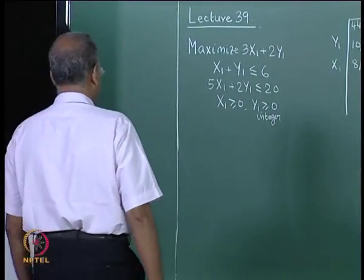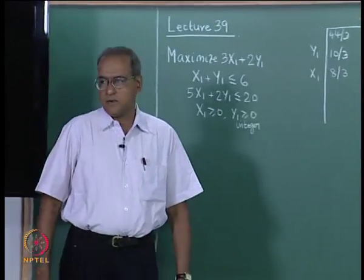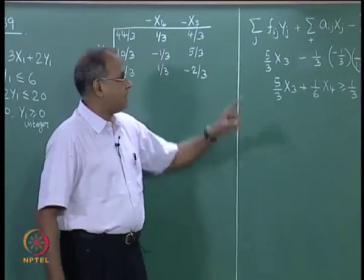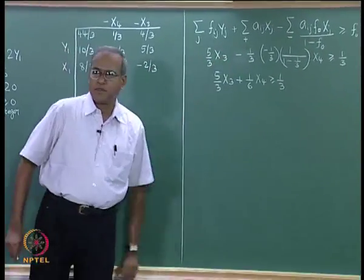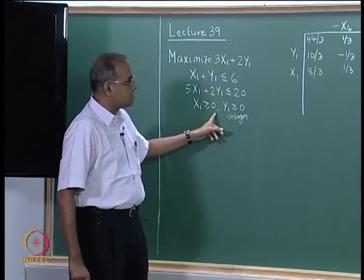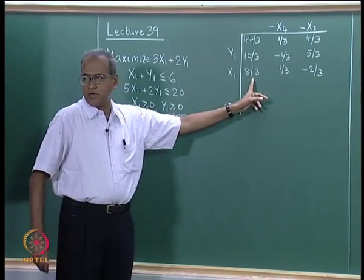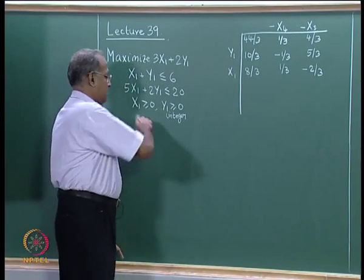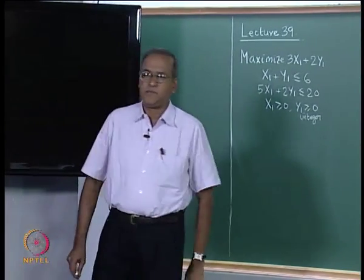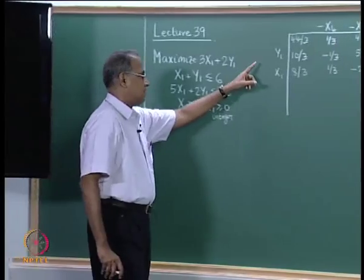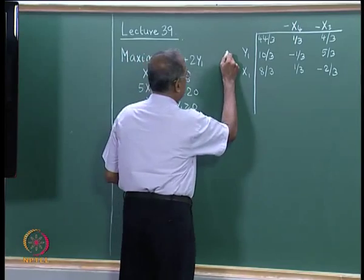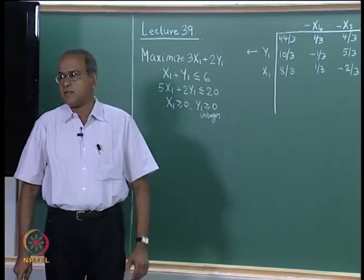We continue the discussion on the MILP cut. In the last lecture, we derived the expression for the MILP cut. We go to the familiar example written here again, with the LP optimum shown. In the example, Y1 is greater than or equal to 0 and integer, but the LP optimum gives Y1 equal to 10/3, which is not an integer value. So the Y1 row will act as a source row to generate the MILP cut.